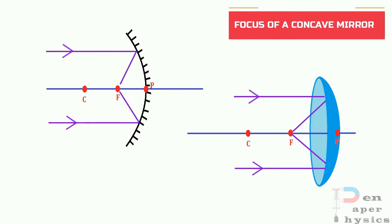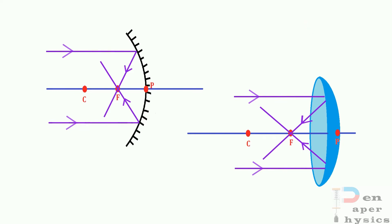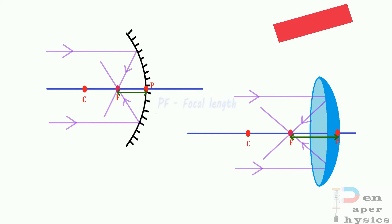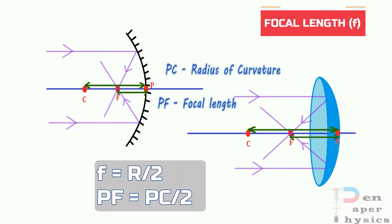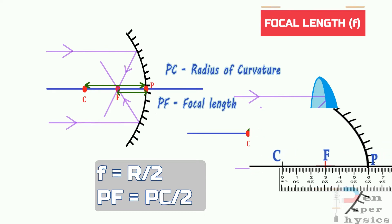When incident rays parallel to the principal axis hit a concave mirror, after reflection they converge and meet at a point on the principal axis. That point is called the focus. Since the rays are converging, a concave mirror is also known as a converging mirror. The distance between the focus and the pole is known as the focal length, denoted by f. PF is the focal length and PC is the radius of curvature. The focal length is exactly half of the radius of curvature — that is why we marked C at 6 cm and F at 3 cm.